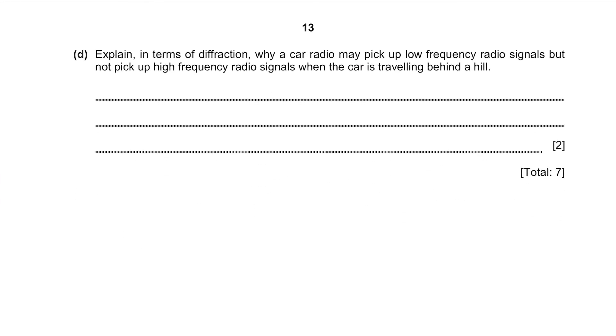Part D. Explain in terms of diffraction why a car radio may pick up low frequency radio signals but not pick up high frequency radio signals when the car is travelling behind the hill. Let me draw this scenario for you. The signals are coming from here and the car is here behind the hill. The question said the car can only pick up low frequency radio signals. Why is that so?